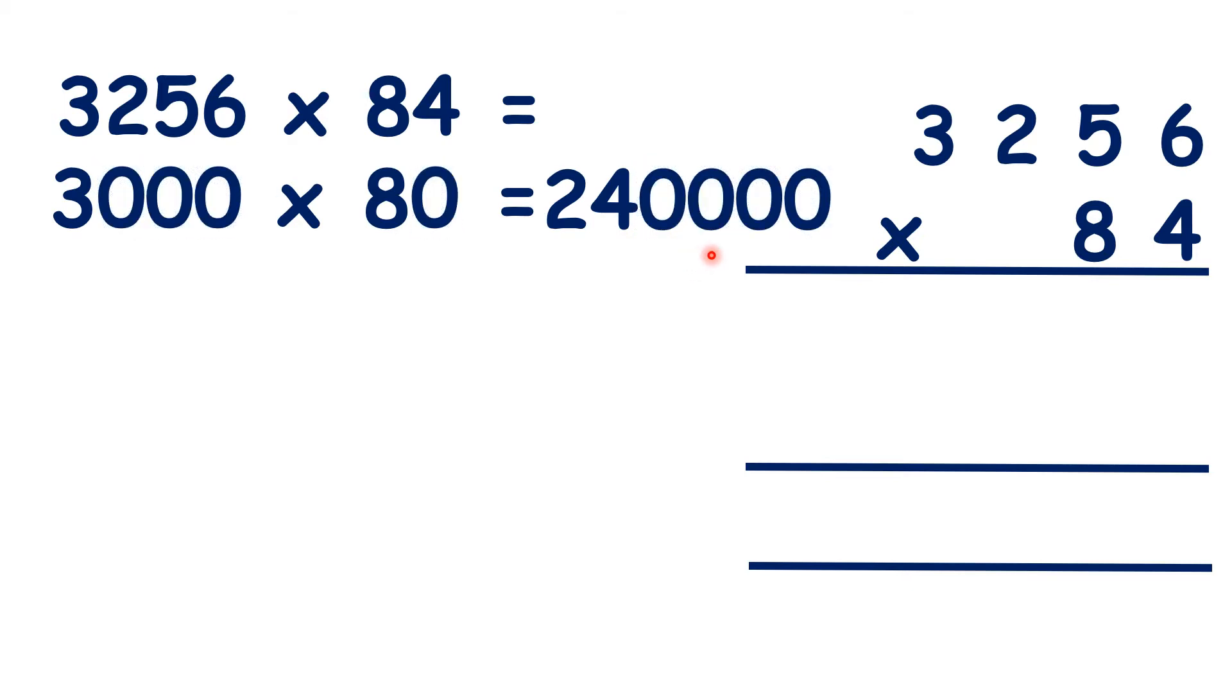So we can expect our answer to 3,256 times 84 to be close to 240,000, but in fact, we can expect our answer to be slightly more than 240,000, because we rounded both numbers down.